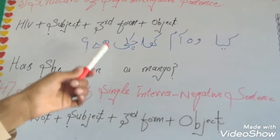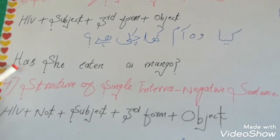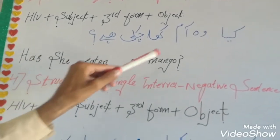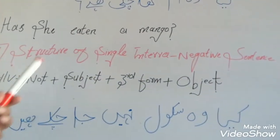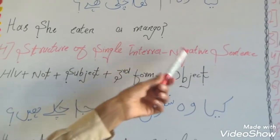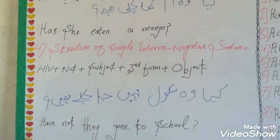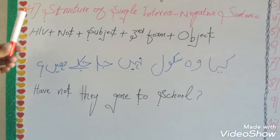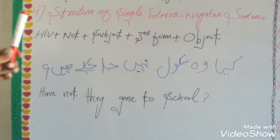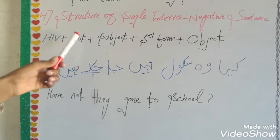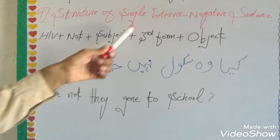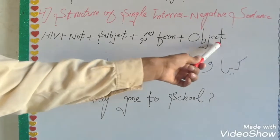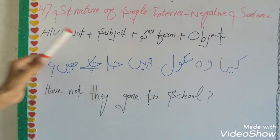Structure of single intranegative sentence. The formula is: first in the structure, helping word, then 'not', then subject, then third form, then object. For example, we have a sentence.